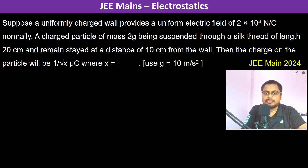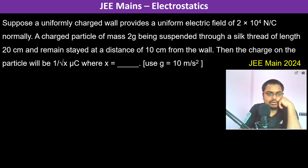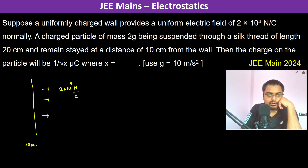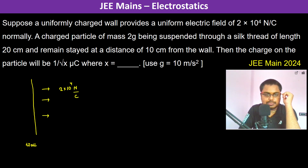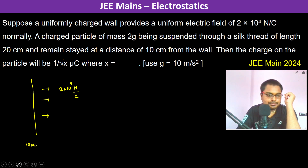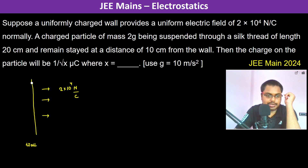Suppose the uniformly charged wall provides a uniform electric field of 2×10⁴ Newton per coulomb. A charged particle of mass 2 gram is suspended through a silk thread of length 20 centimeter and remains at a distance of 10 centimeter from the wall.